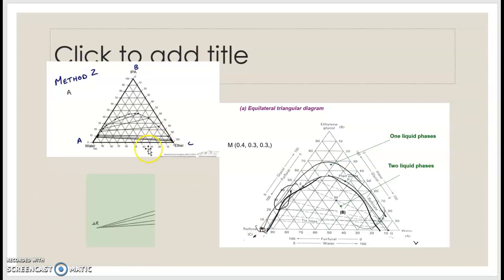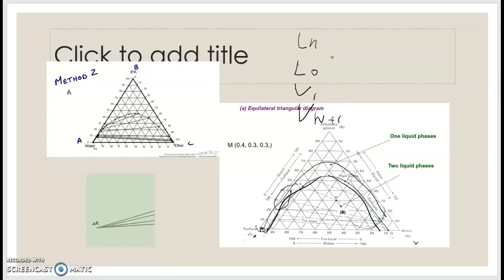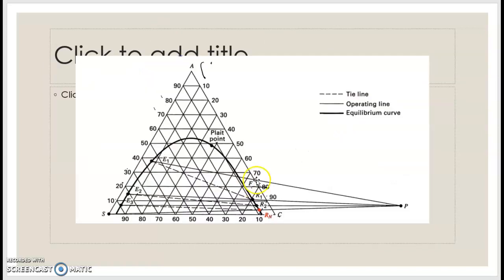To calculate the stages, you first need all the compositions for each stream: LN, L0, V1, and VM+1. You also need the tie-line compositions, which connect your extract and your raffinate — the extract is your V stream and the raffinate is your LN stream.